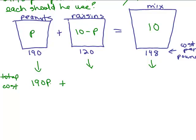Now, remember, Tim is having to pay for the peanuts and the raisins. So, how much would the raisins cost? Well, it again would be the cost per pound times how many pounds he has. So, the cost per pound is 120 cents per pound and how many pounds are there? It's what's in this box. 10 minus P.